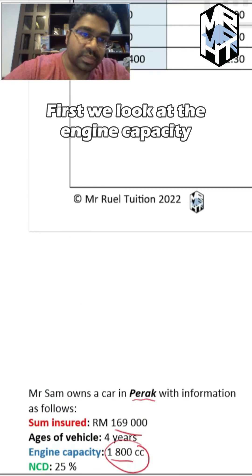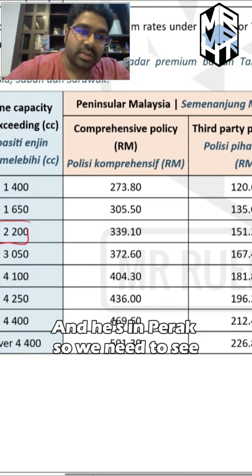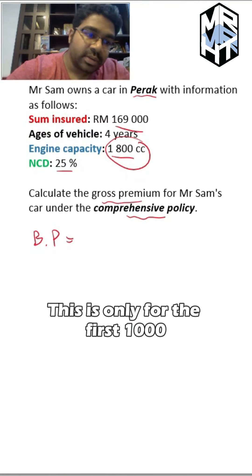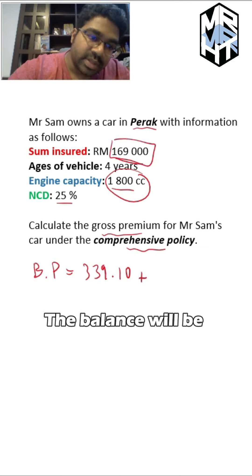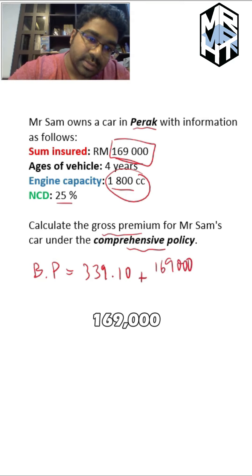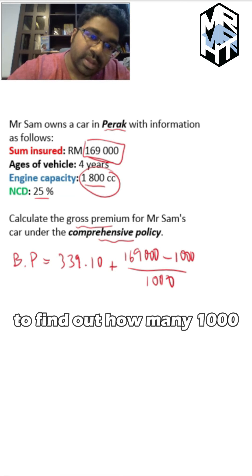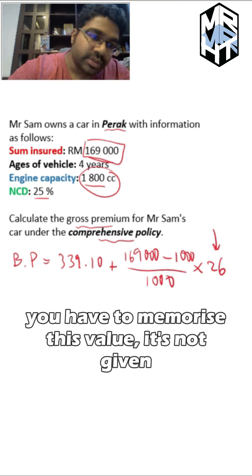We look at the engine capacity and go to the tariff. 1800cc is less than 2200cc, and he's in Peninsular Malaysia, so under comprehensive policy the rate is 339.10 — this is only for the first 1000. Then the balance is 169,000 minus 1,000, divided by 1,000 to find how many thousands, multiplied by 26 (the Peninsular Malaysia rate — you have to memorize this value, it's not given).